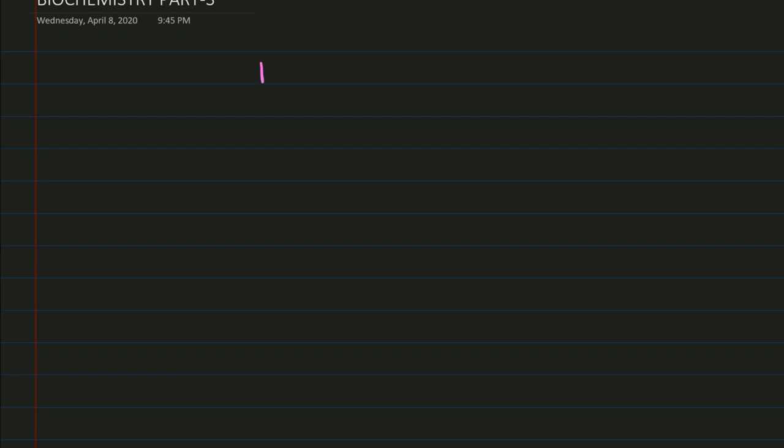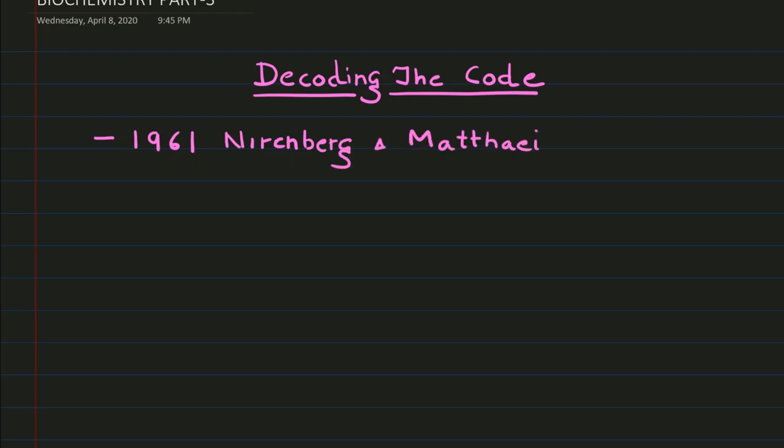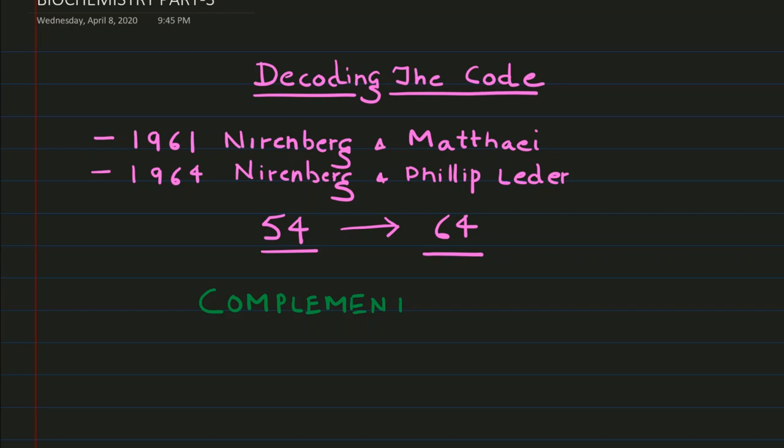Previously we discussed decoding the genetic code and the different experiments that were performed. First was the 1961 Nirenberg and Mathai experiment, and second was the 1964 Nirenberg and Philip Leder experiment. Both experiments decoded 54 codons out of 64, but there was a complementary approach adopted by Professor Har Gobind Singh Khorana to decode the genetic code.